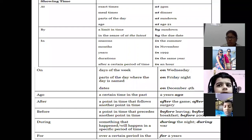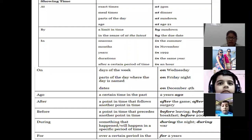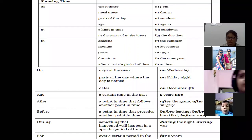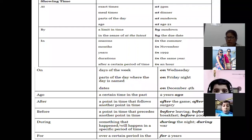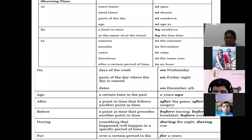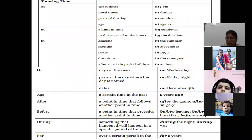'Ago' is used for a certain time in the past: two years ago I visited my nanny's house. 'After' is used for a point in time that follows another: I will study after the game. 'Before' is a point in time that precedes another: before leaving I will complete my assignment, before leaving I will clean my table. 'During' is used for something that happened in a specific period: during the night, during the war.